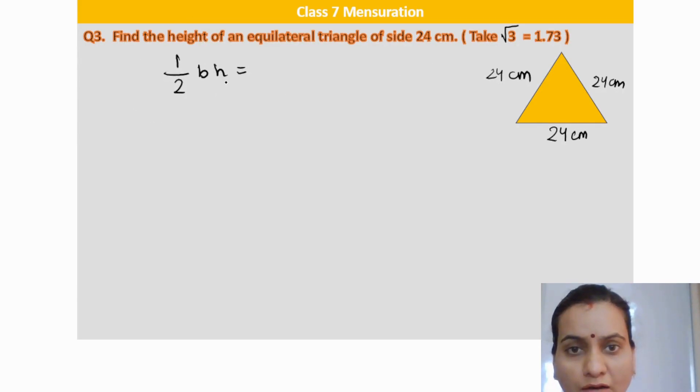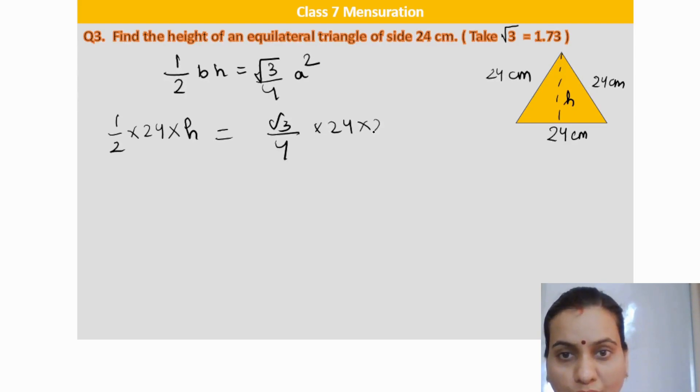a is 24 centimeter, which is also the base value. Height is the same in an equilateral triangle. All three heights or altitudes are of the same length. So half into 24 into height is equal to root 3 by 4 times 24 square. 24 in numerator and denominator cancel out.